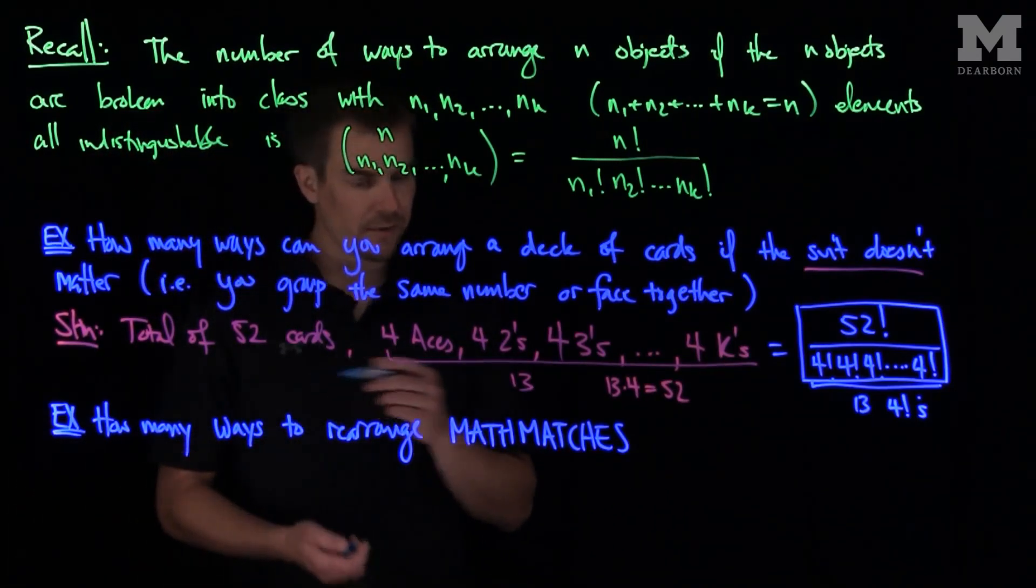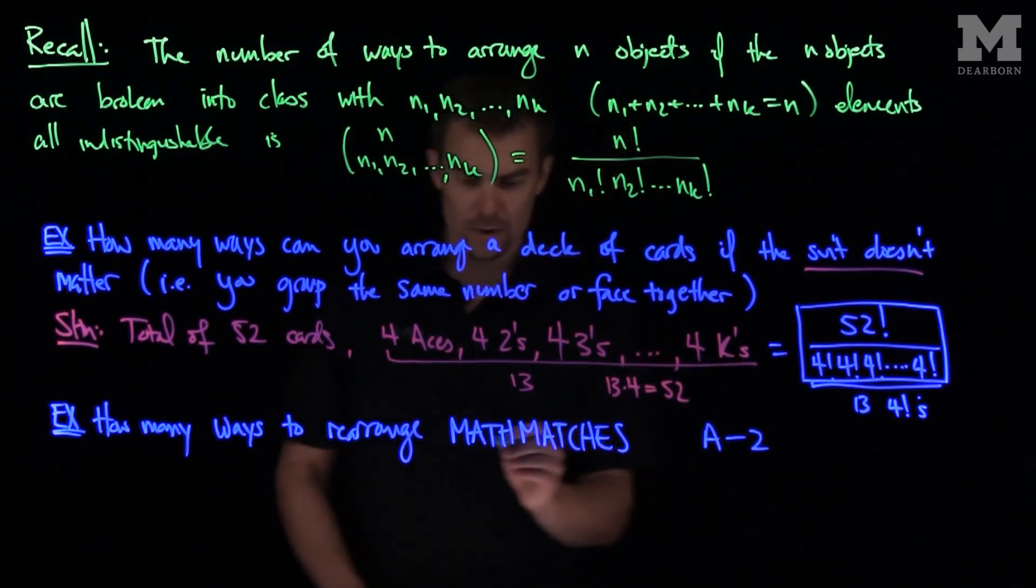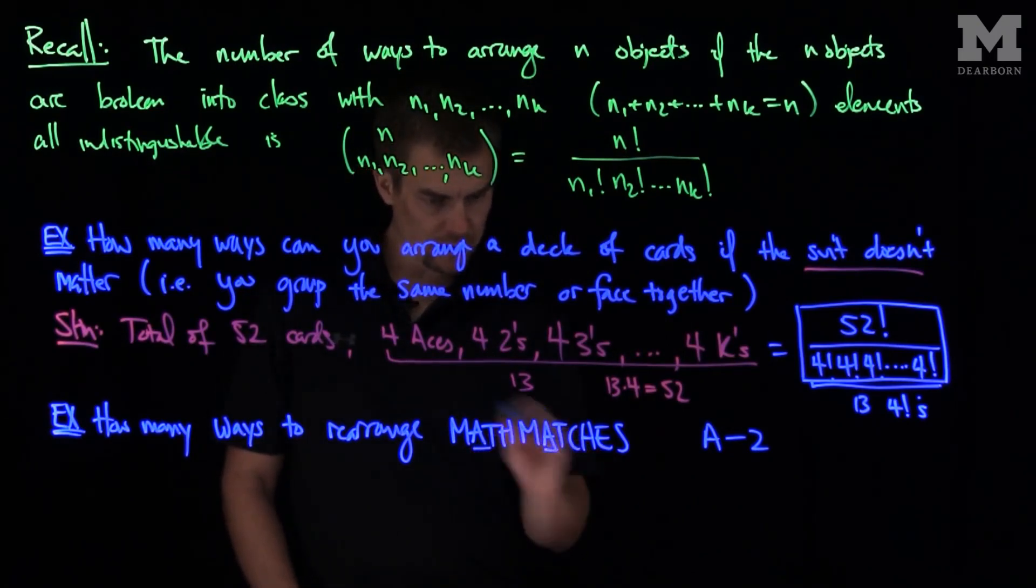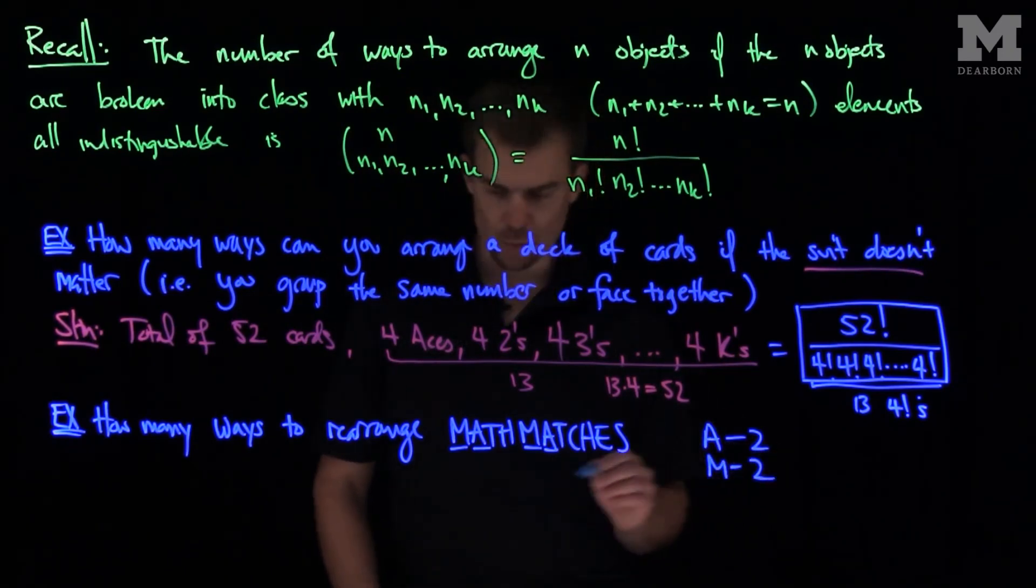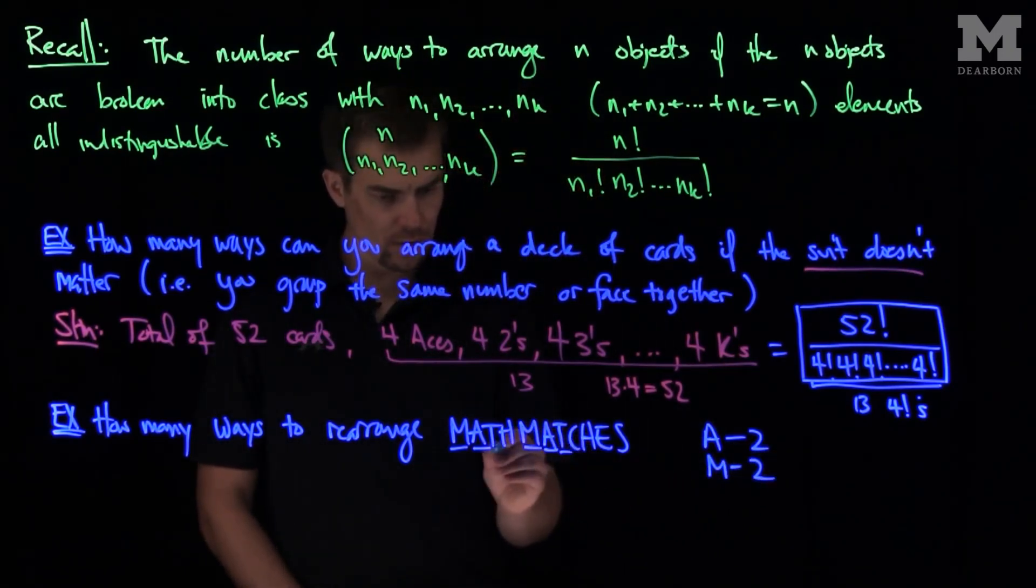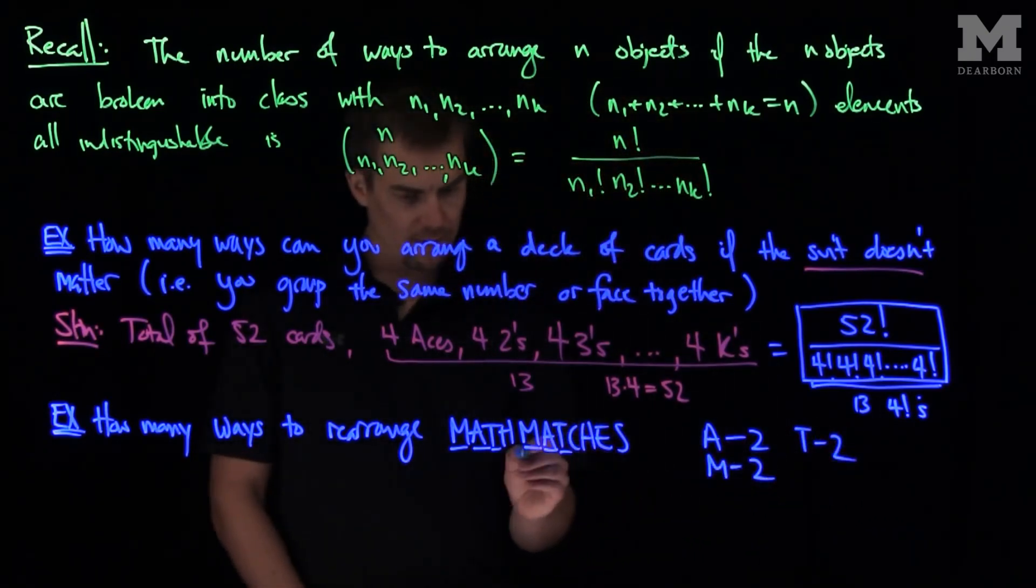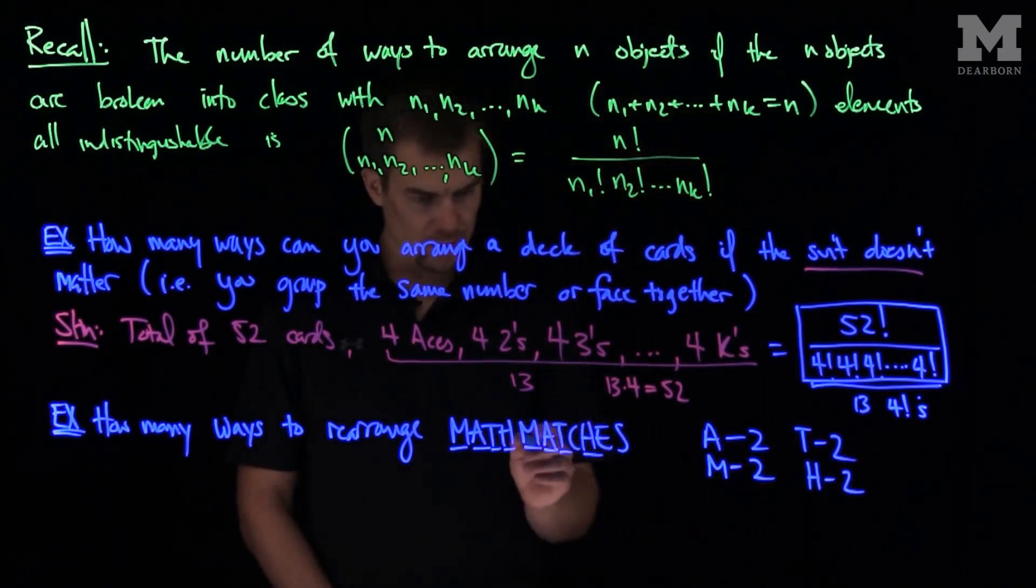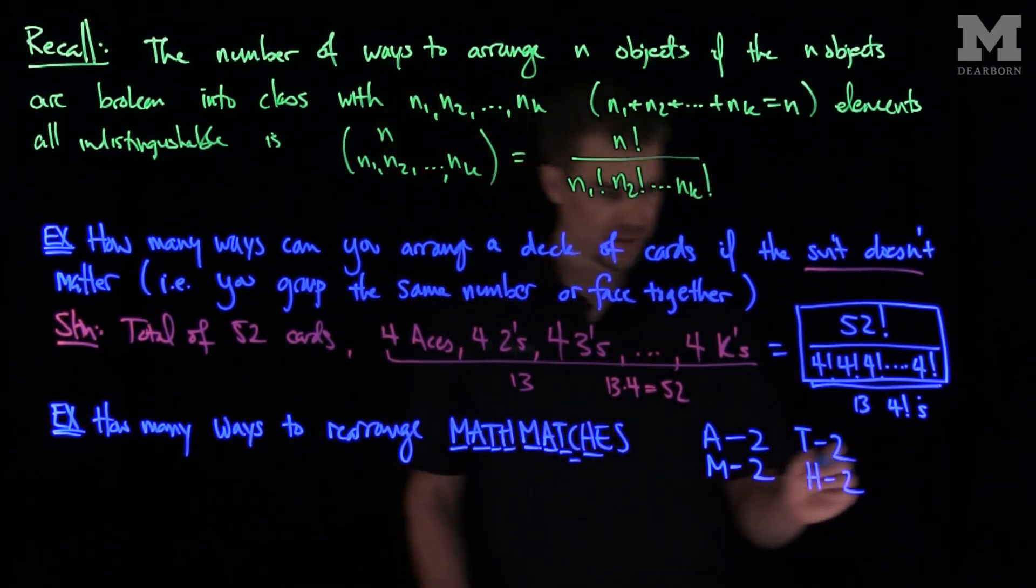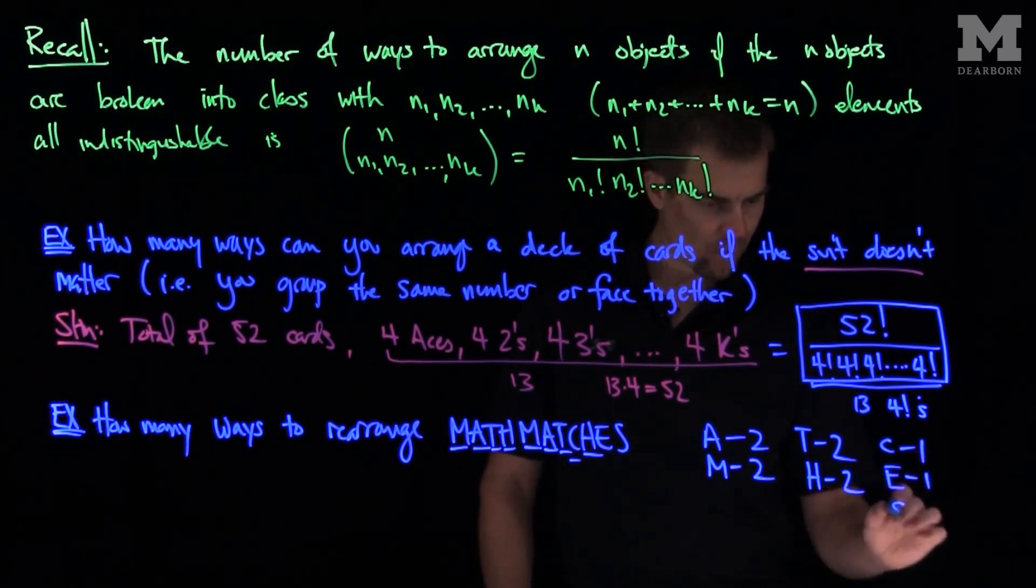So we have this made up word MATHMATCHES and I want to find the number of ways to rearrange this expression. We have different letters. We have the A's, a total of 2 A's. We have a total of 2 M's, that's one class. We have a total of 2 T's, a total of 2 H's. And now we have 1 C, 1 E, and 1 S.